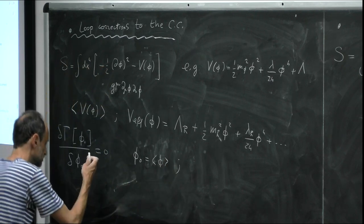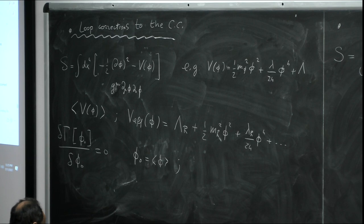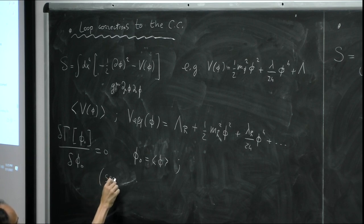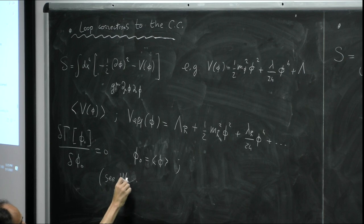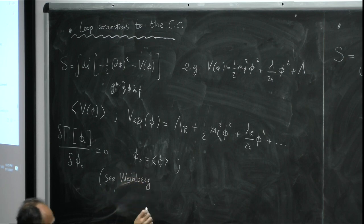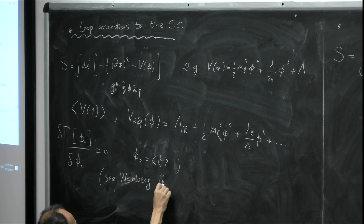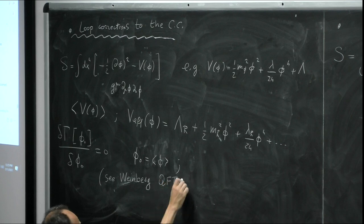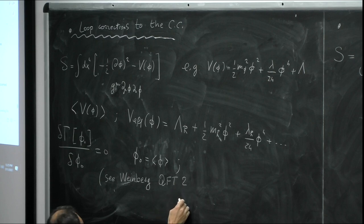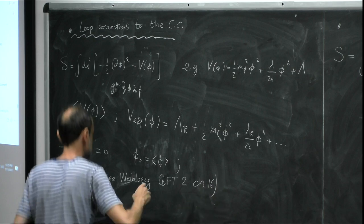This calculation follows Weinberg's QFT textbook, volume 2, chapter 16. The effective action in the end contains a term corresponding to the renormalized cosmological constant, plus kinetic terms and others. We focus on the effective potential for a constant scalar field.